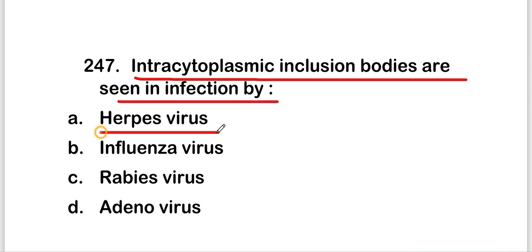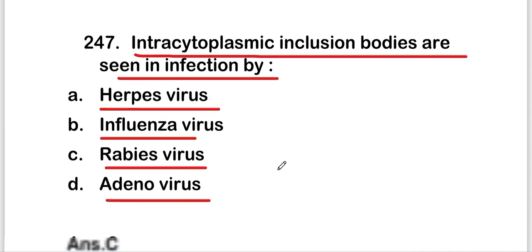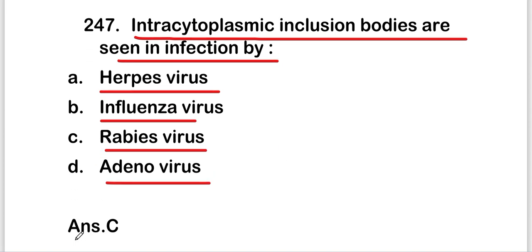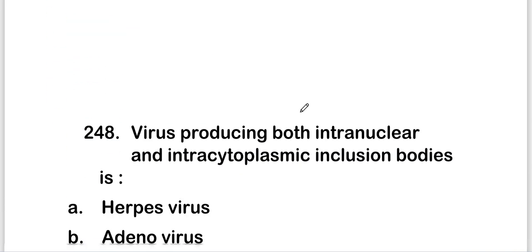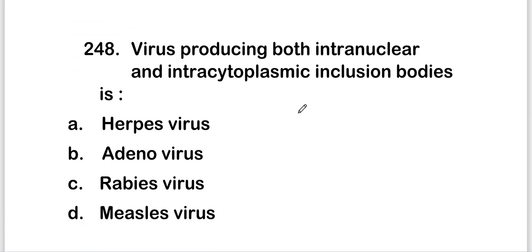The next question: intracytoplasmic inclusion bodies are seen in infection by herpes virus, influenza virus, rabies virus, or adenovirus? The right answer is option C — rabies virus. Intracytoplasmic inclusion bodies are seen in infection by rabies virus.